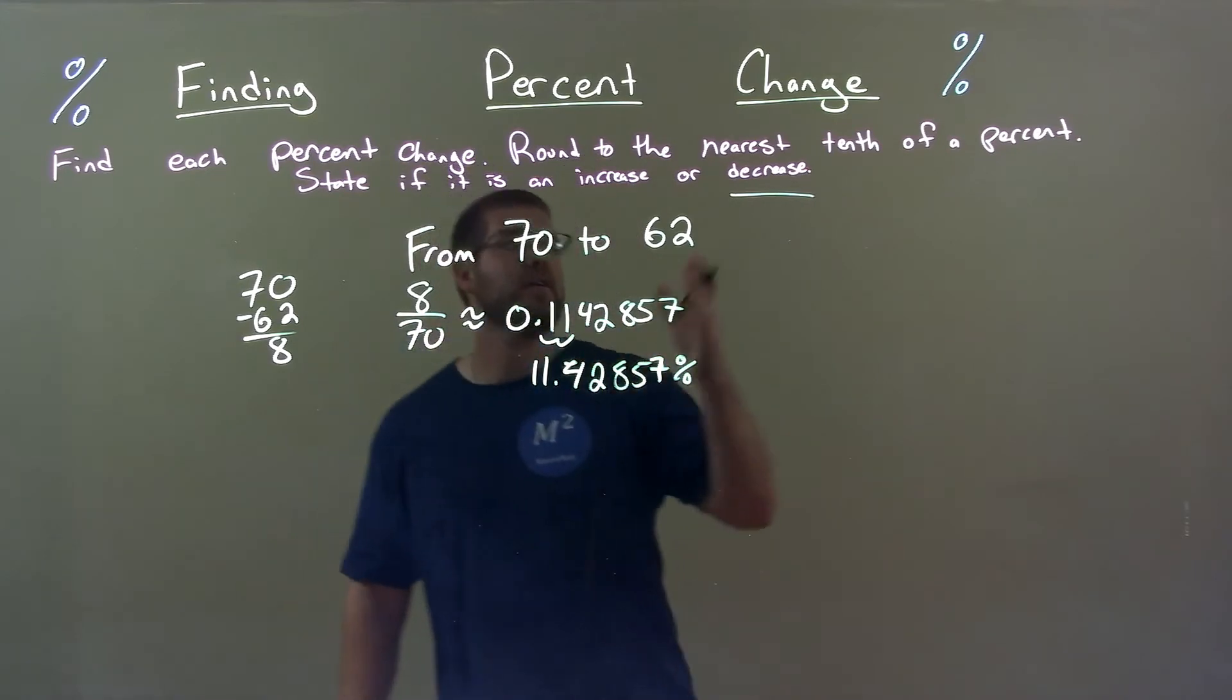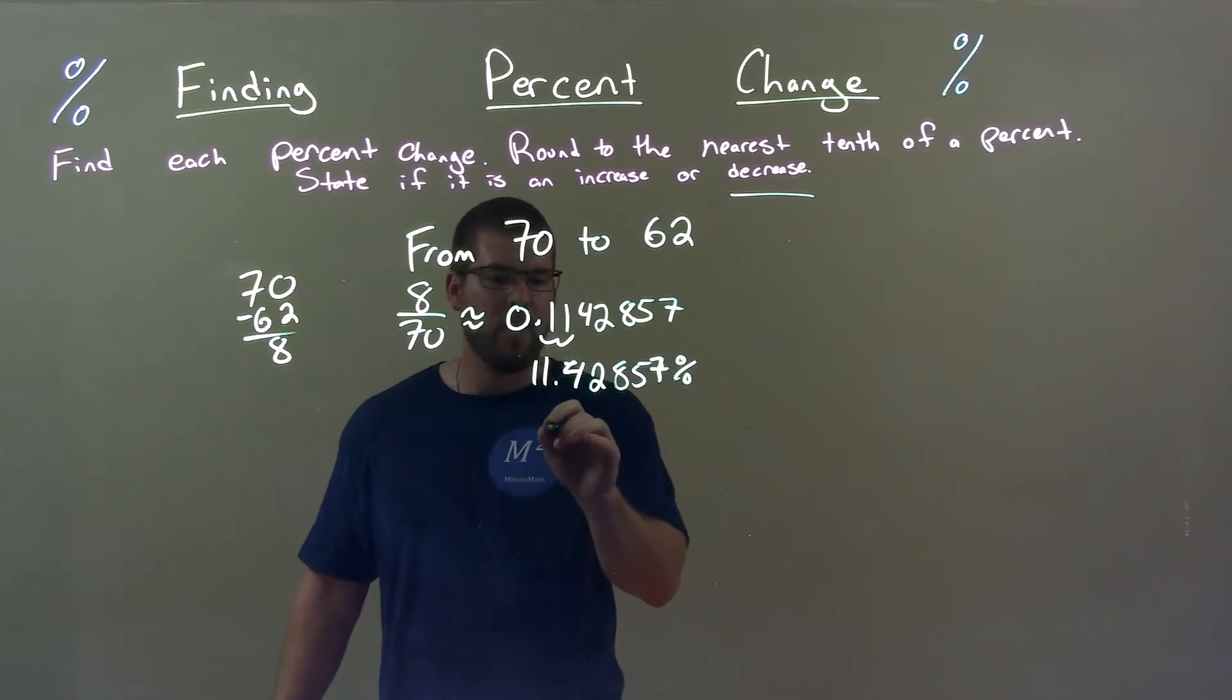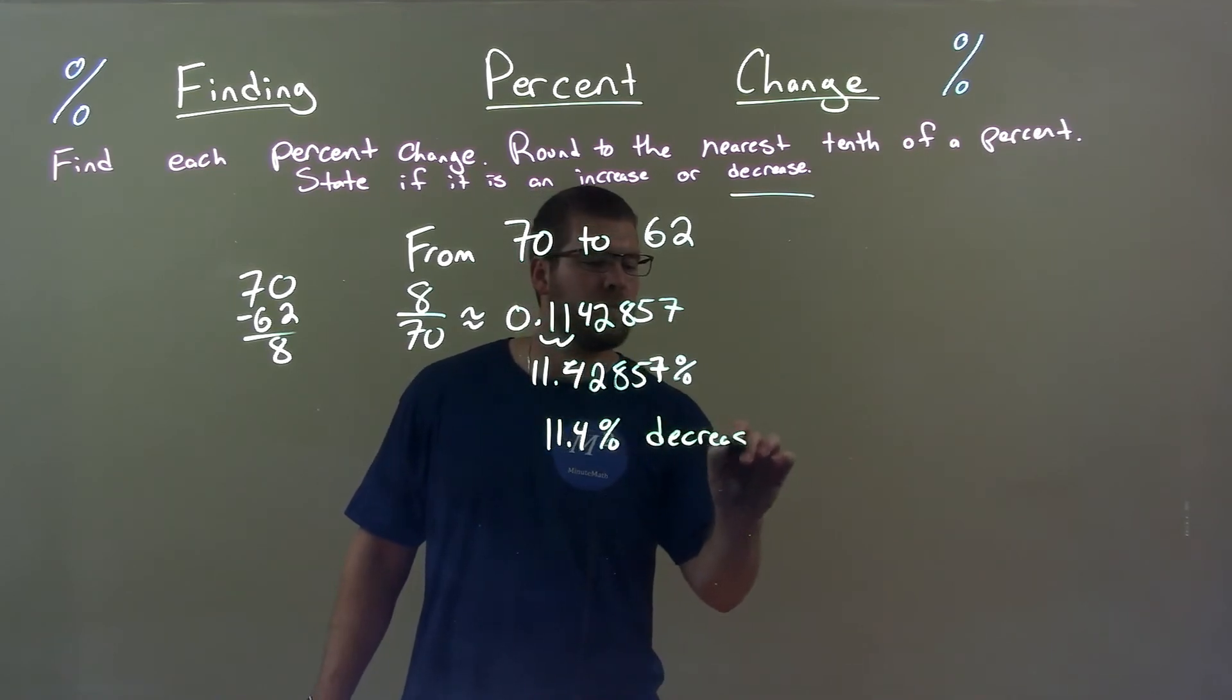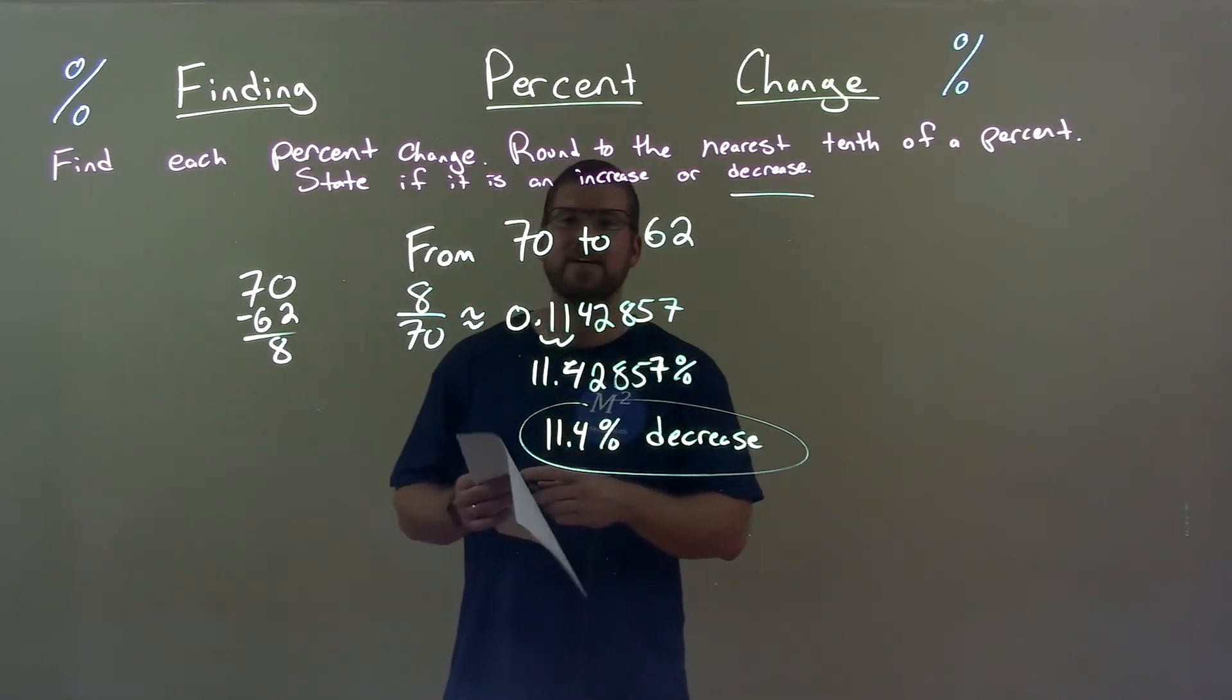Now, round to the nearest tenth of a percent. We look at the 2. 2 causes the 4 to stay where it is. We have 11.4 percent. We already said it was a decrease. And there we have our final answer, 11.4 percent decrease.